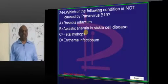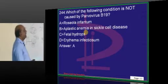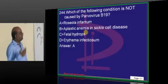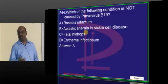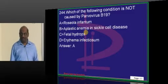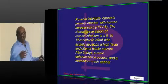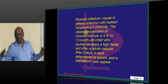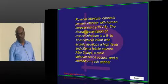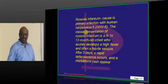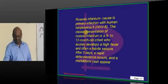Parvovirus B19 typically leads to erythema infectiosum. Who causes roseola infantum? Human herpes virus 6. These are all exam themes for newborn and pediatric age groups — you must study the first disease, second disease, third disease classifications.